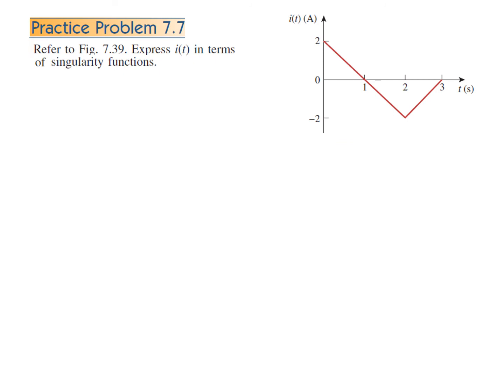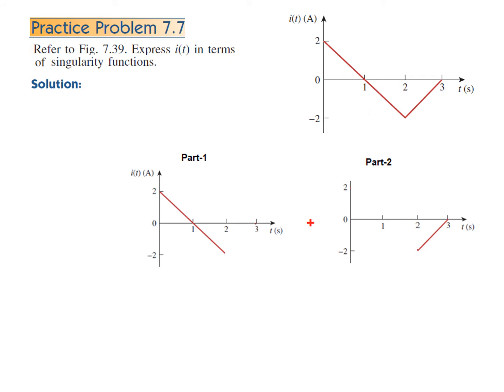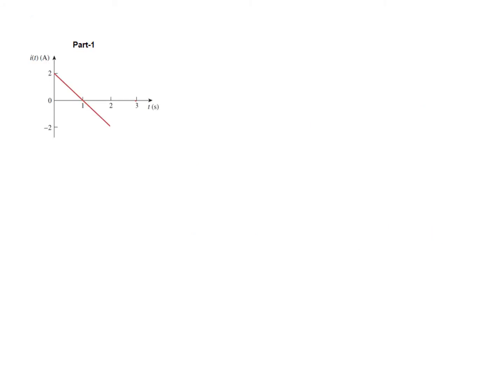The practice problem is very interesting. We divide it into two parts: part one up to t = 2, and part two from t = 2 onward, solving them separately. For part one, the function is not in singularity form, so we incorporate a ramp function in the negative direction. From the graph, x = 1 and y = 2, so slope = 2. Therefore we use a negative slope of -2 for this ramp function.